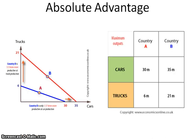Once you've determined it's the output method, you can figure out absolute advantage. In the output method, absolute advantage simply means who can make the maximum amount. Comparing cars between country A and B, country B has an absolute advantage because 35 million is larger than 30 million. For trucks, country B also wins because 21 is larger than 6. In the input method, you'd look for the least number — who uses the fewest resources to make that set amount.